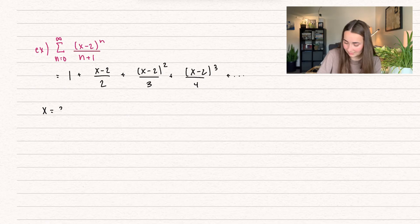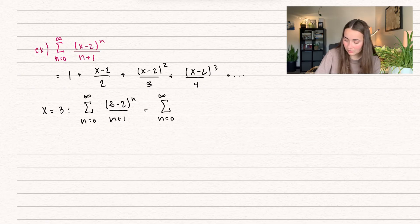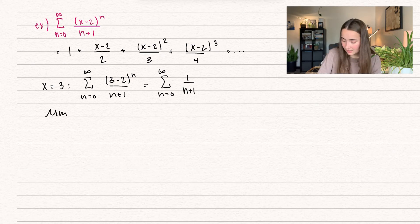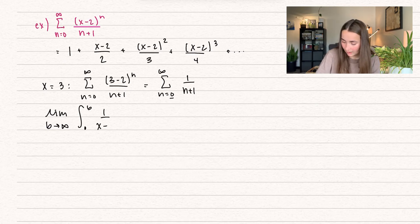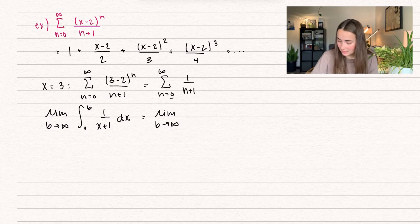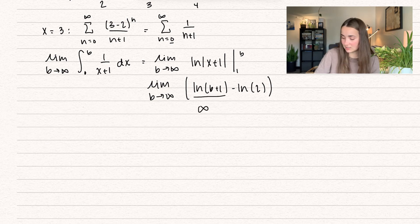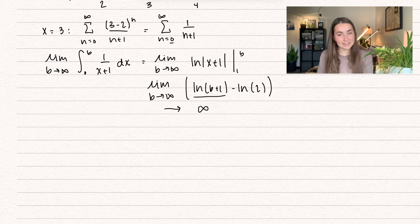Let's plug in x equals 3. We have the summation n equals 0 to infinity of 3 minus 2 to the power of n divided by n plus 1, which gives us 1 to the power of n divided by n plus 1 — and since 1 raised to anything is 1, this simplifies to 1 divided by n plus 1. To evaluate convergence, I'll use the integral test: taking the limit as b approaches infinity of the integral from 0 to b of 1 over x plus 1 dx. The antiderivative gives us the limit as b approaches infinity of the natural log of x plus 1 evaluated between 0 and b. As b approaches infinity, natural log of infinity diverges to infinity. So because our integral diverges, our series also diverges.